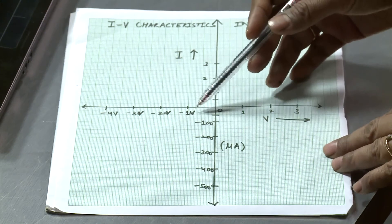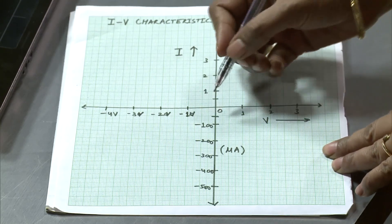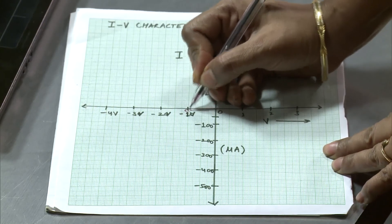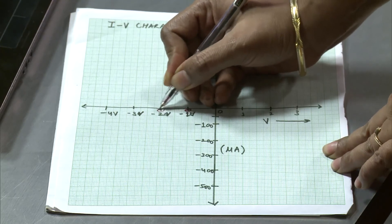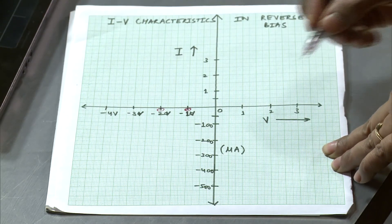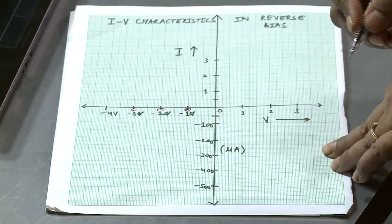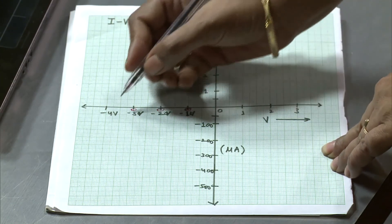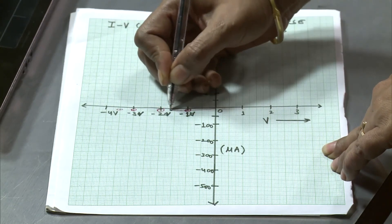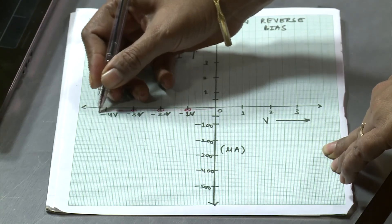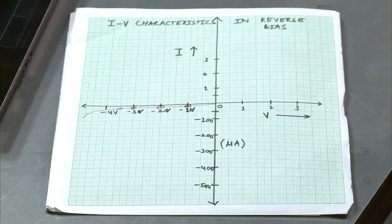Plotting the reverse bias readings: corresponding to 1 volt, the current was 2.1 microamperes — negligibly small. For 2 volts, the current raises to 5.9 microamperes, again very very small. For 3 volts, the value raises to about 8.3 microamperes, and for 3.4 volts, the value rises to 32.9 microamperes. What is observed is that in the reverse bias, very small amount of current flows through the diode, so the diode offers a very large resistance. Unlike forward bias where conduction is possible, in reverse bias the diode does not conduct and acts like a switch.